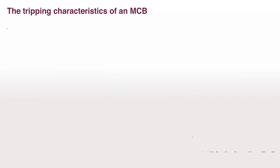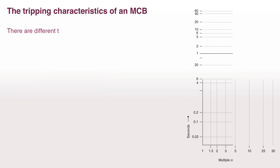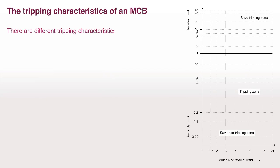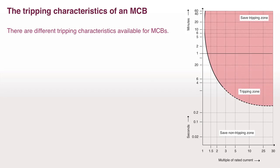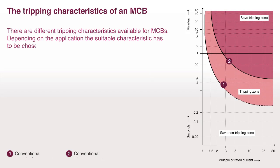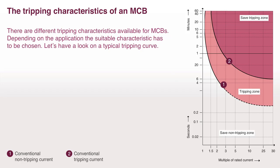The tripping characteristics of an MCB. There are different tripping characteristics available for MCBs. Depending on the application, the suitable characteristic has to be chosen. Let's have a look at a typical tripping curve. The y-axis represents the time. The x-axis represents the multiples of rated current.